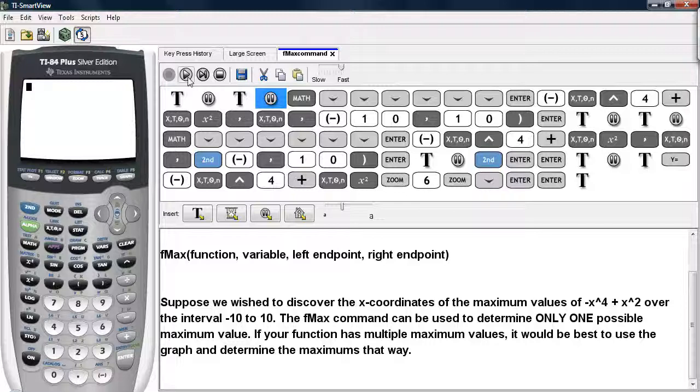The fmax command can be used to determine only one possible maximum value. If your function has multiple maximum values, it would be best to use the graph and determine the maximums that way.